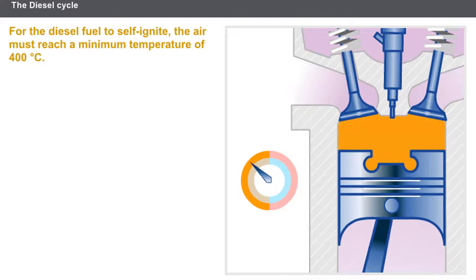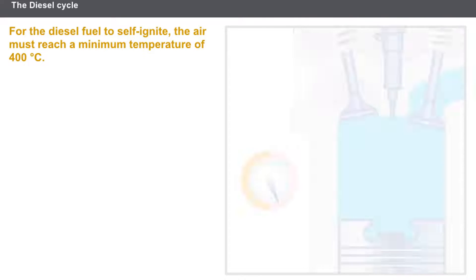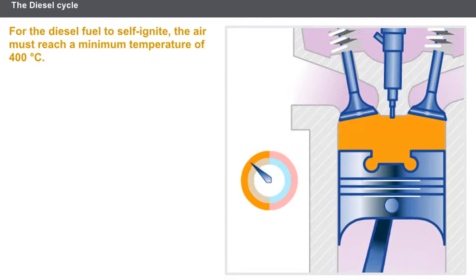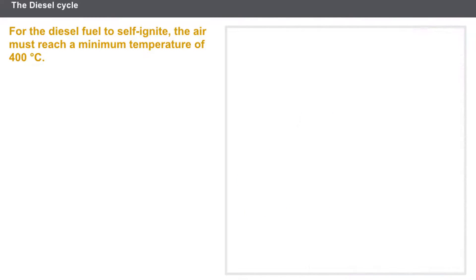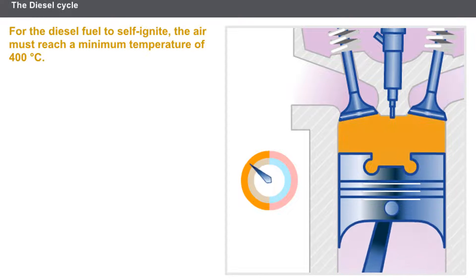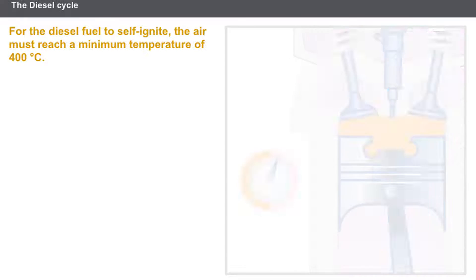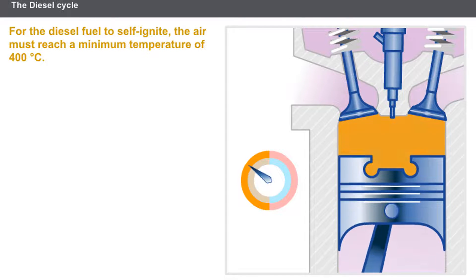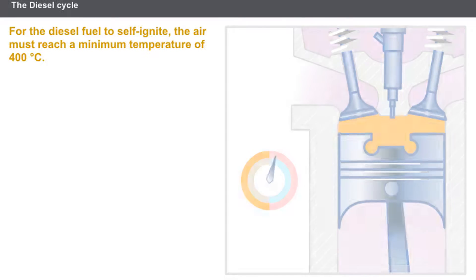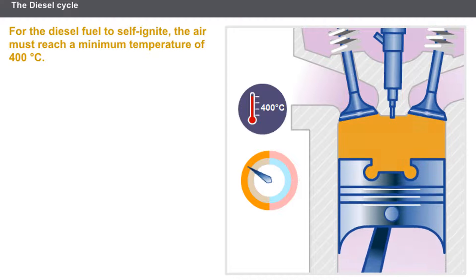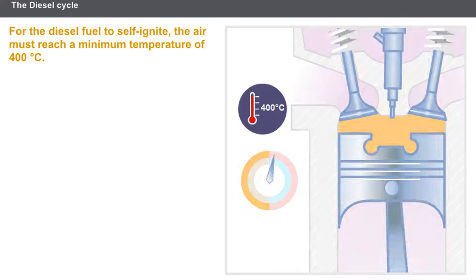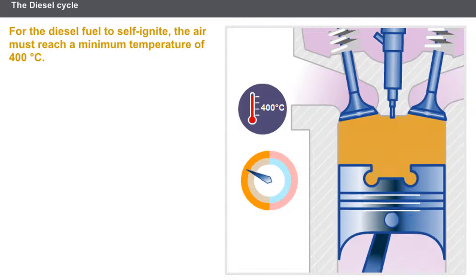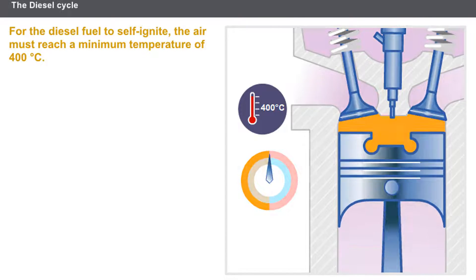During the compression phase, the two valves are closed and the piston rises. A high rate of compression is required to obtain a large increase in the temperature of the air. For the diesel fuel to self-ignite, the air must reach a minimum temperature of 400 degrees Celsius.